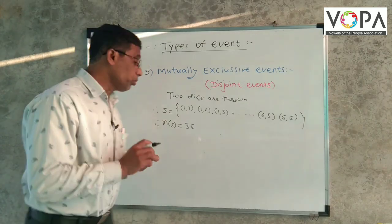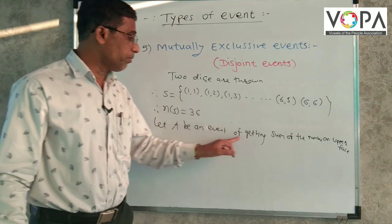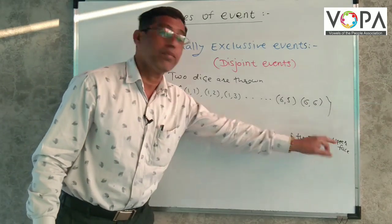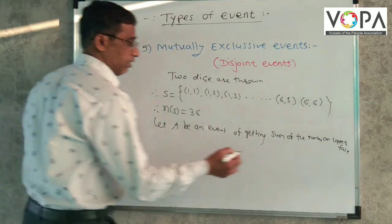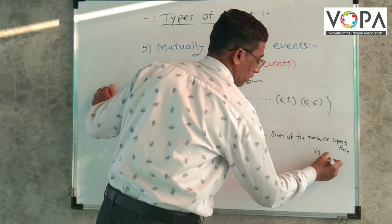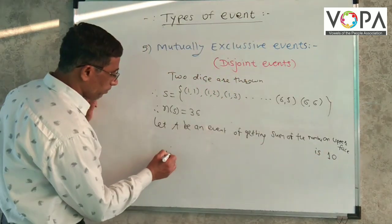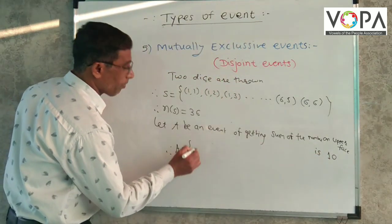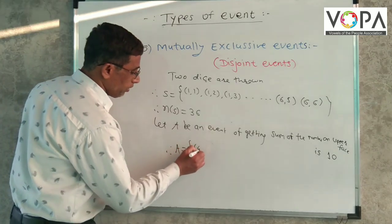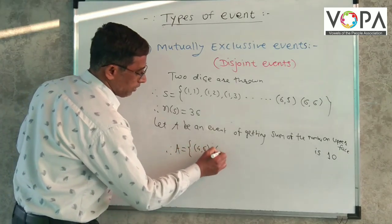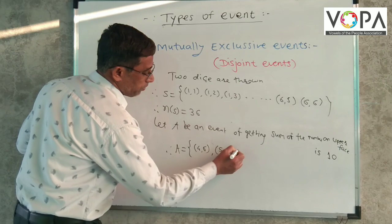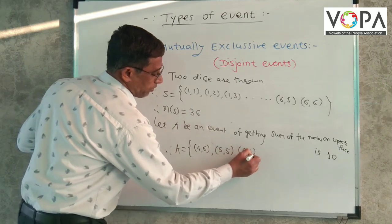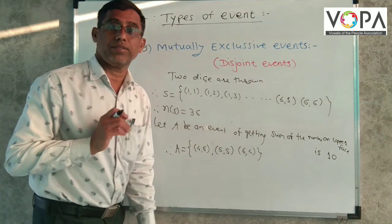Then we take two events. Let A be an event of getting sum of the number on the upper face is 10. Therefore, A is equal to (4,6), (5,5), and (6,4) means only three numbers.